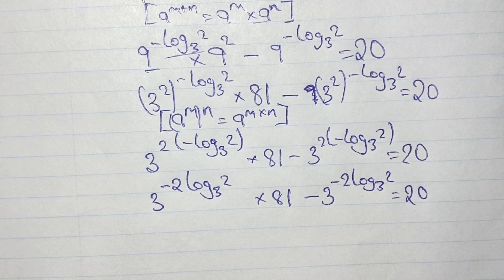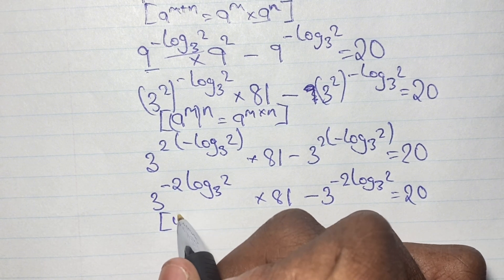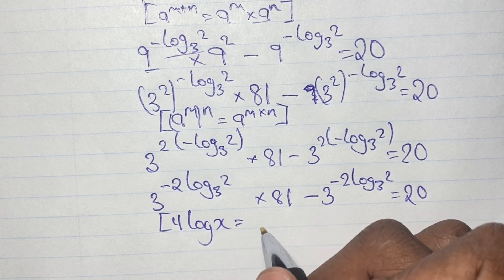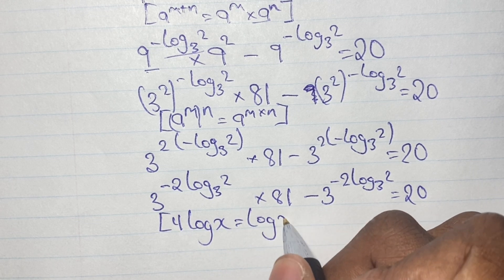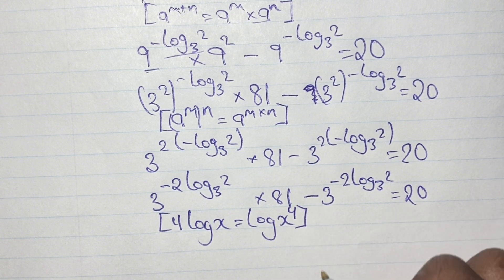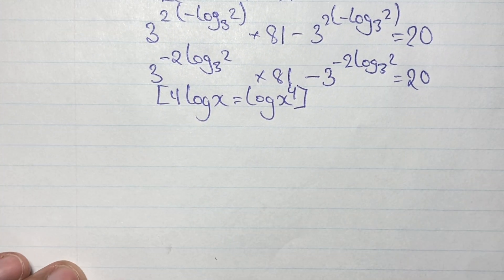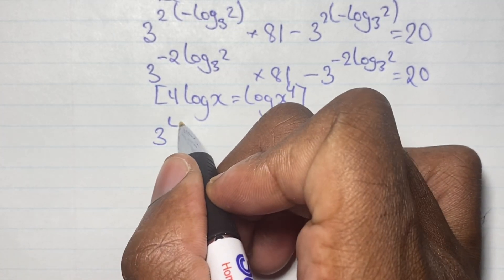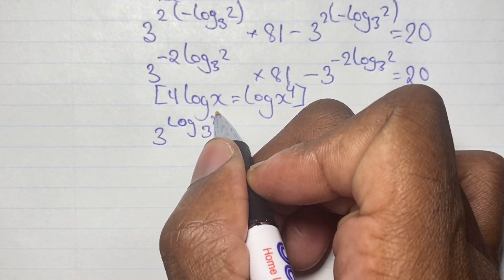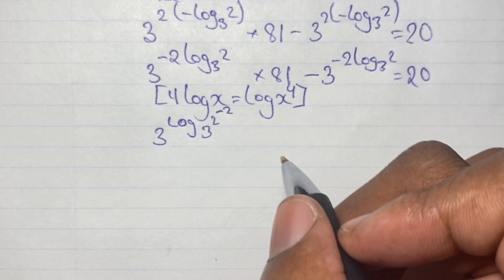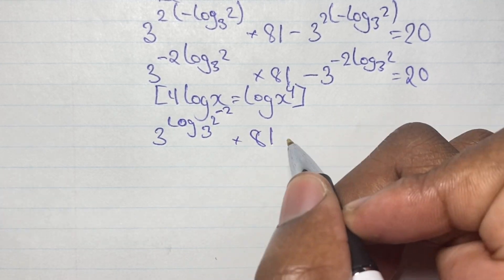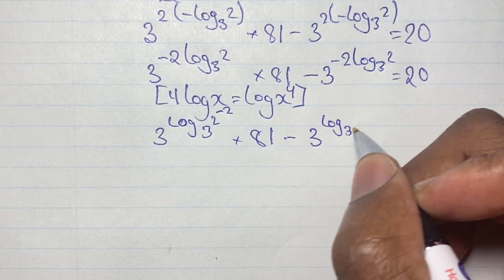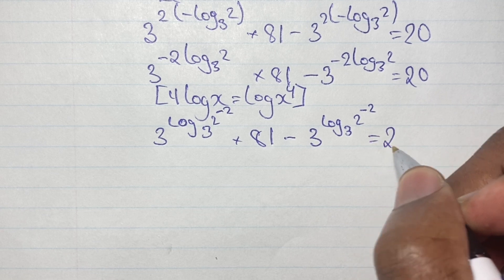Now we apply our logarithm rule once more, where y to the power of log x is the same as log x to the power of y. Applying this rule, our equation becomes 3 to the power of log base 3 of 2 to the power of negative 2, times 81, minus 3 to the power of log base 3 of 2 to the power of negative 2, all equal to 20.